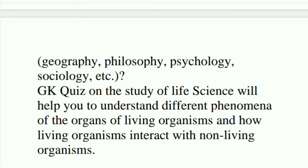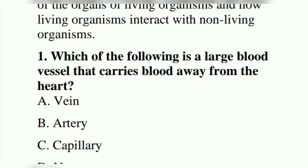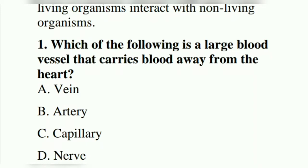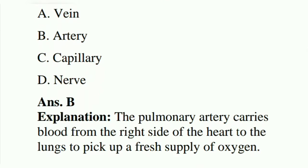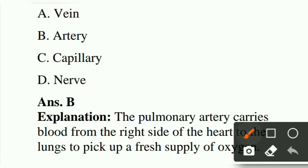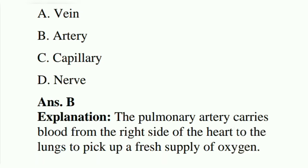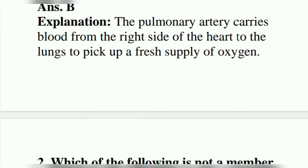First question of biology: which of the following is a large blood vessel that carries blood away from the heart? Option A: veins. Option B: arteries. Option C: capillary. Option D: nerves. The answer is B, arteries. Explanation: the pulmonary arteries carry blood from the right side of the heart to the lungs to pick up a fresh supply of oxygen.